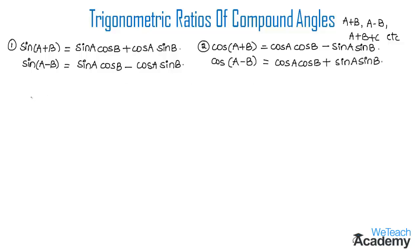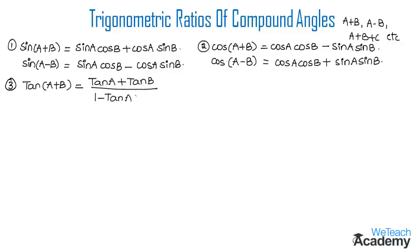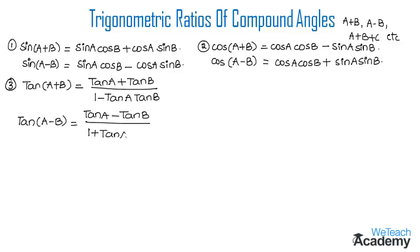And the next Trigonometric Ratio is tan. tan(A+B) is equal to tan A plus tan B divided by 1 minus tan A tan B. And the next formula: tan(A−B) is equal to tan A minus tan B divided by 1 plus tan A tan B.